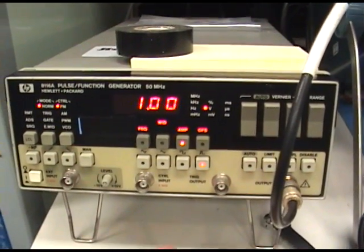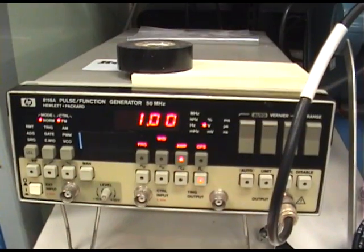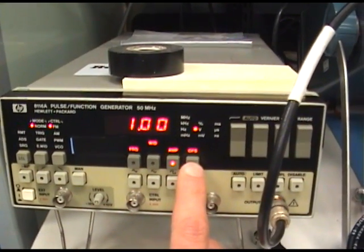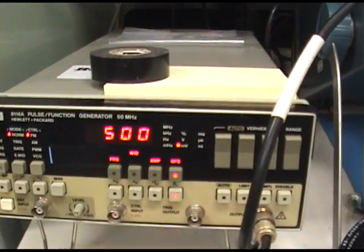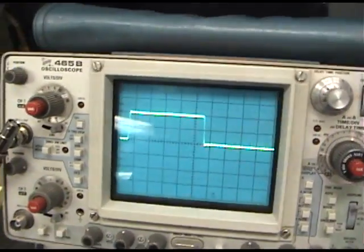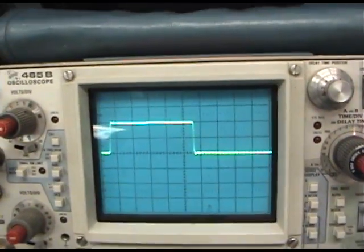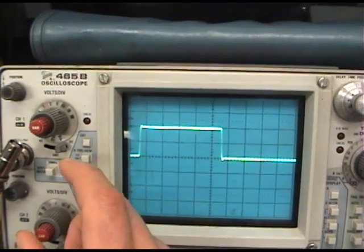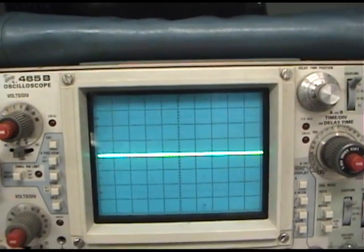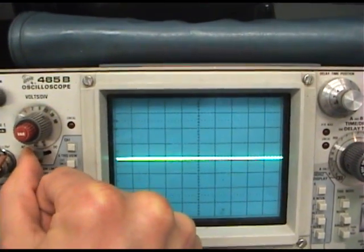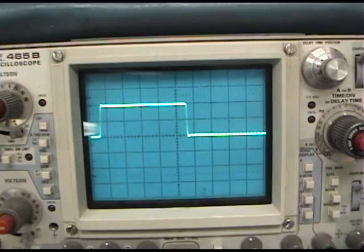I want only a positive going pulse, so I set an offset of 500 millivolts. And if we look at the scope, we can see that if I show the ground reference, we can see that I do have a positive going pulse.